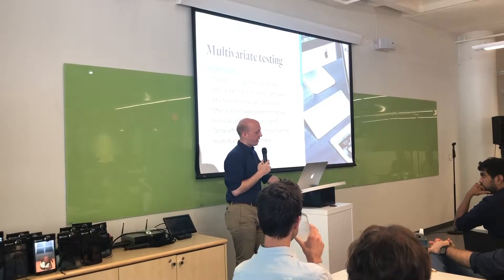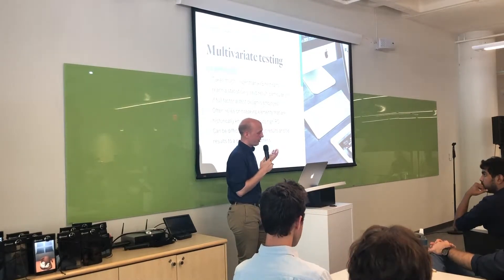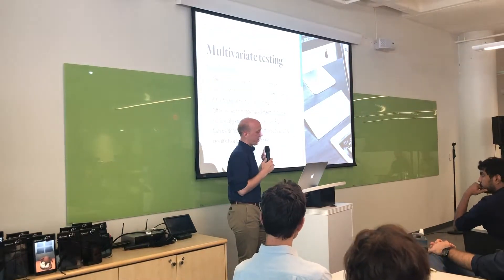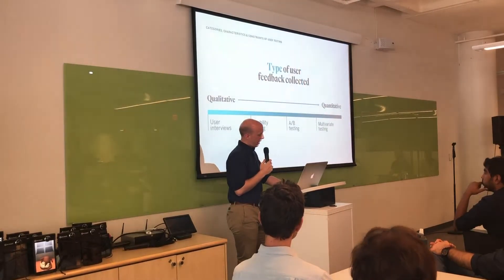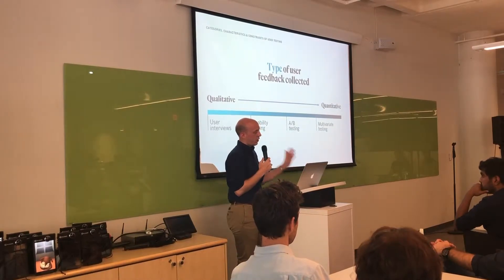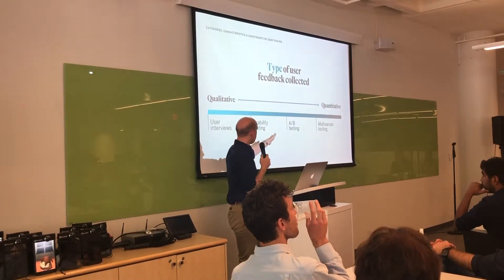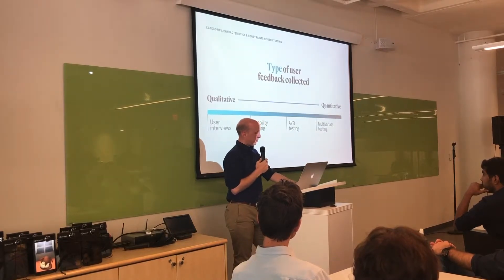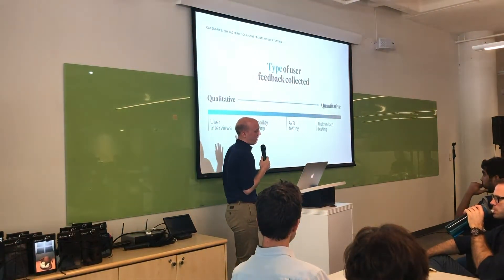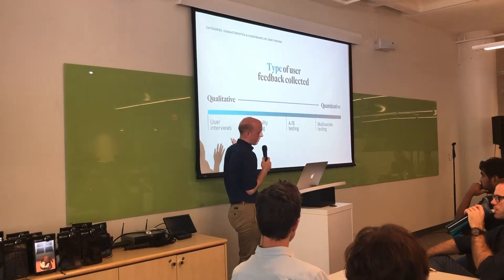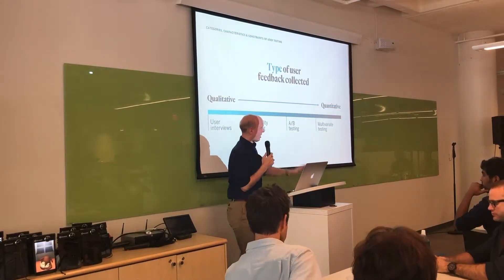Now that we've looked at a few different types of testing, I think the best way to compare them - aside from just looking at pro and con lists - is to pass them across a couple of different spectra. The order in which I discussed them is also the order in which they fall for this discussion. First, I want to look at the type of user feedback collected. This one falls along the spectrum of qualitative to quantitative. The order here is user interviews, usability testing, A/B, and multivariate. On the qualitative side, it's really concerned with the meaning behind things and the definition of concepts or characteristics, whereas on the quantitative side it's concerned with counting or measuring.